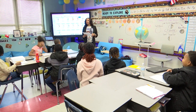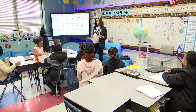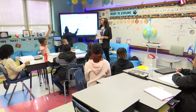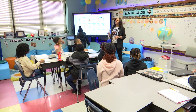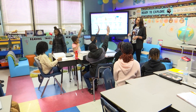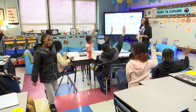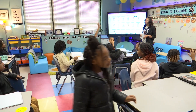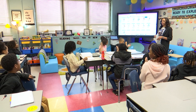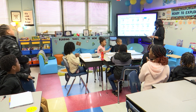How long does it take the Earth to make a full revolution around the Sun? Alira? Good job. One year — 365 days.